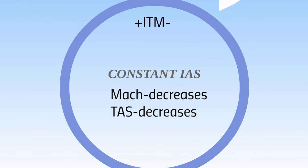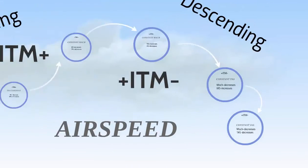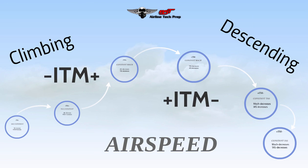If you're holding a constant indicated airspeed in a descent, your true airspeed is going to decrease and your Mach is going to decrease. You've got I on the left with nothing further left, and T and M to the right — the negative is on the right side — so everything to the right of I decreases. That's how you use the ITM formula to get the answers on the test. If you've got any questions, comment below. Hope this helps, and thanks for hanging out!